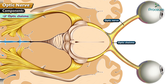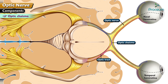The fibers from the nasal half of the retina cross to the opposite side, but those of the temporal halves do not cross. After decussation, the nerve fibers are called the optic tract.